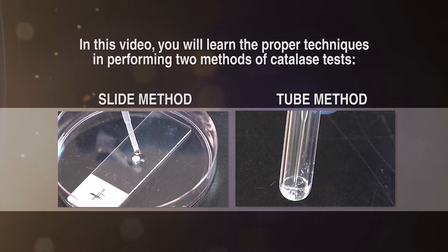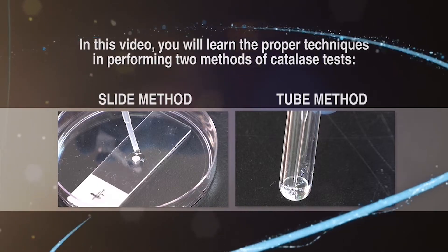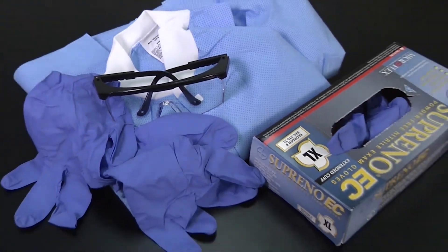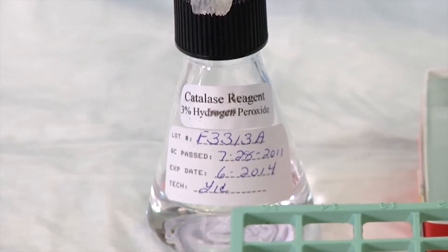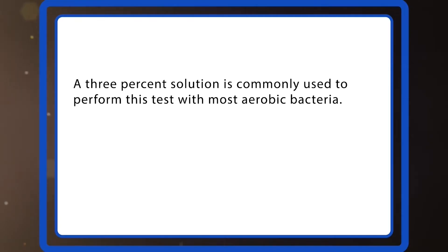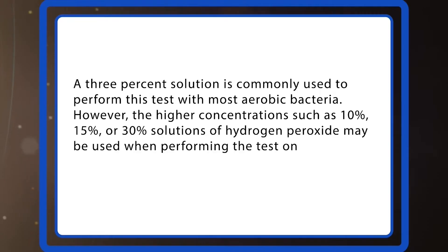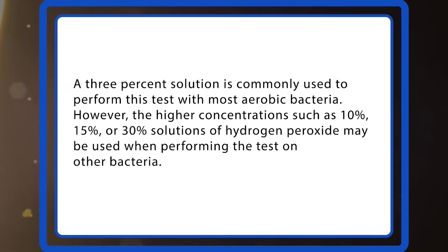In this training program you will learn the proper techniques in performing two methods of catalase tests: the slide method and the tube method. For these procedures you will need personal protective equipment and a three percent solution of hydrogen peroxide (H2O2). A three percent solution is commonly used with most aerobic bacteria; however, higher concentrations such as 10%, 15%, or 30% solutions may be used when performing the test on other bacteria.